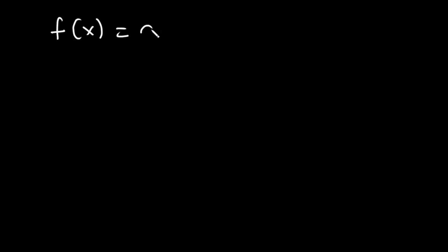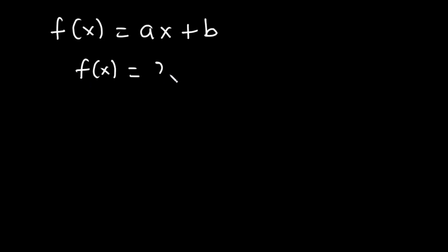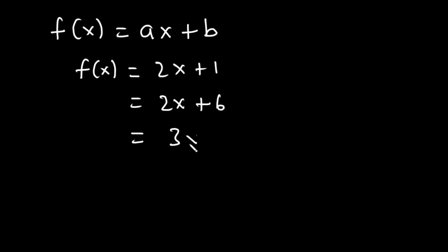Let's begin our discussion with linear and quadratic functions. A linear function is a function of the form ax plus b, where a and b are constants. a is called the slope or gradient and b is called the intercept. Examples of linear functions are: 2x plus 1, 2x plus 6, and 3x.